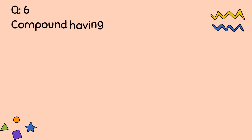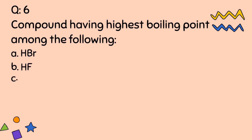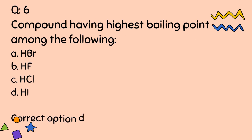Question number 6. Compound having highest boiling point among the following: A. HBr. B. HF. C. HCl. D. HI. Correct option is D.